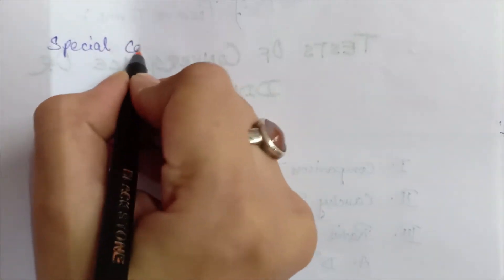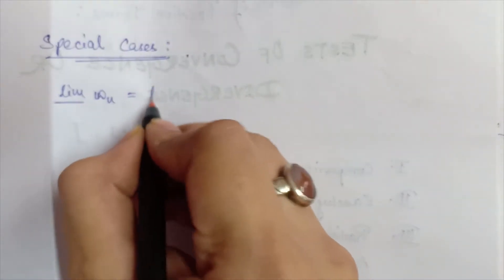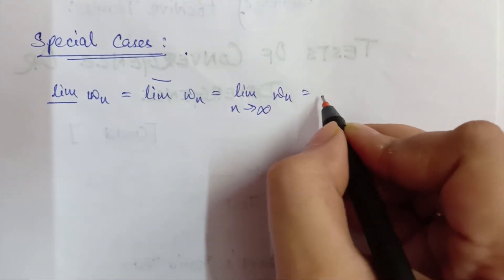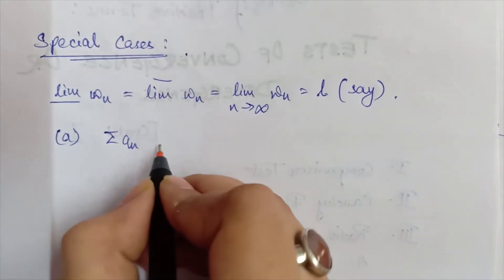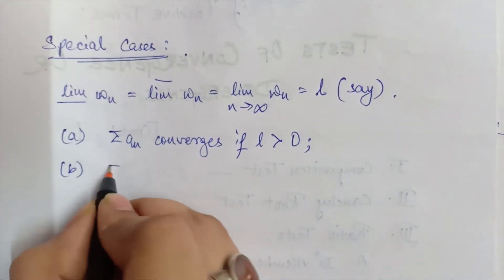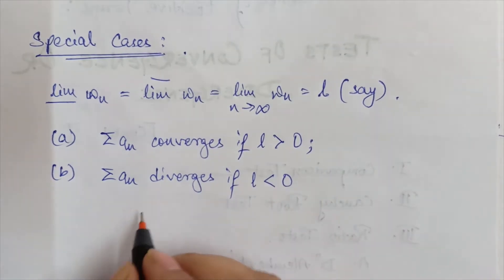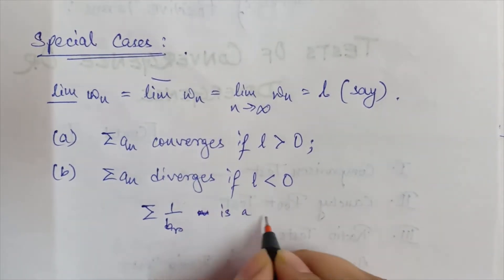Looking at some special cases: if the lower limit of W_n equals the upper limit of W_n equals the limit as n tends to infinity of W_n, say equal to L, then the series a_n converges if L is greater than 0, and the series a_n diverges if L is less than 0, where the series 1/b_n is a divergent series.